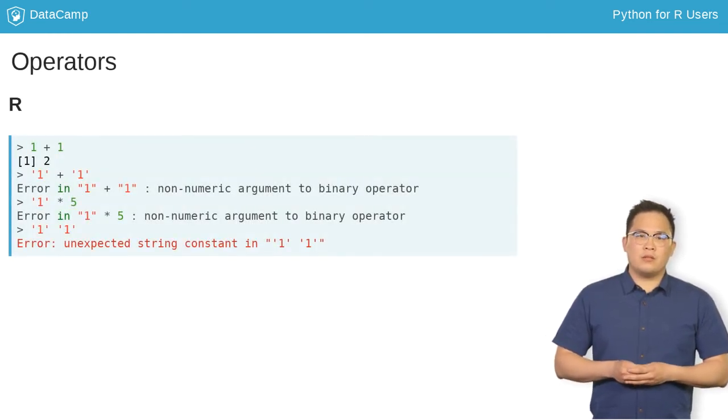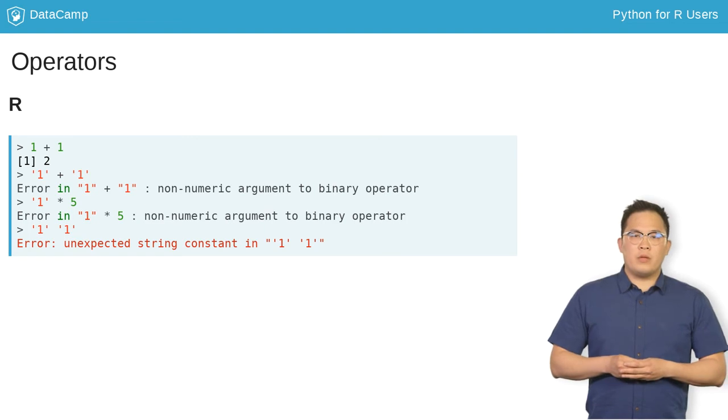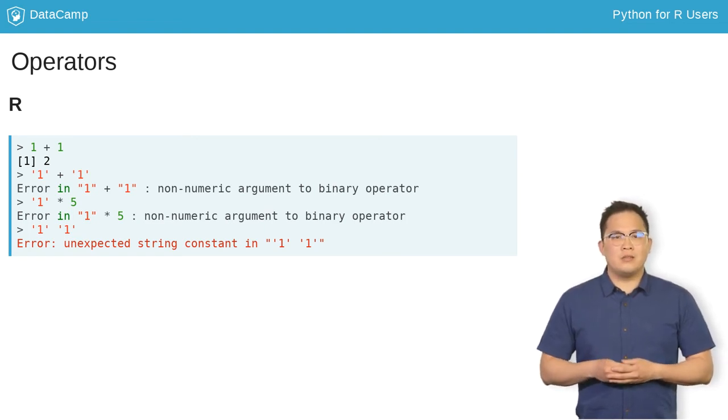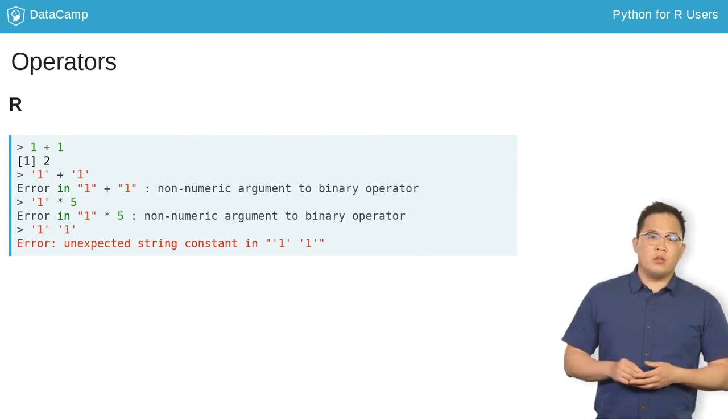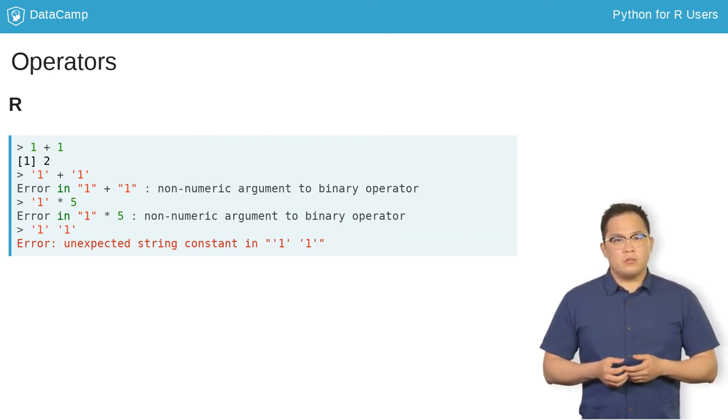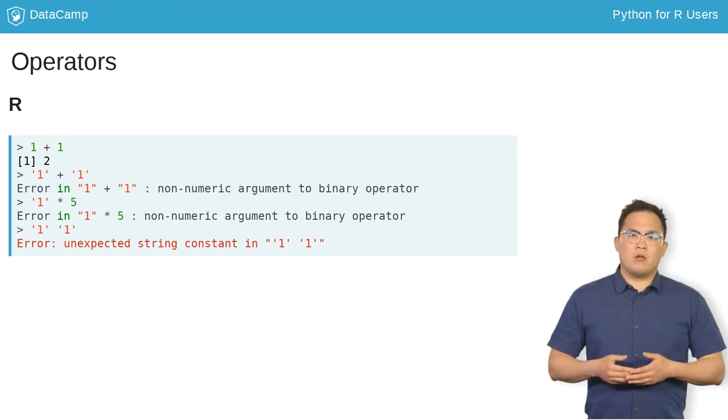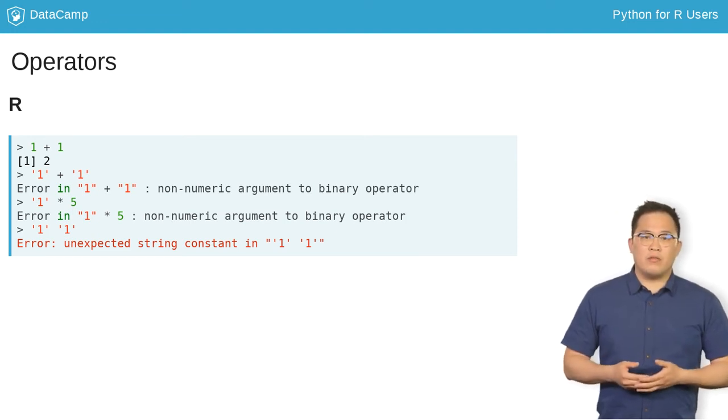Knowing the type of an object is important because you will get different behavior from different operations depending on the type. For example, if you add two numeric values, you get the sum of the values. You can't perform mathematical operations with non-numeric values in R.